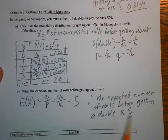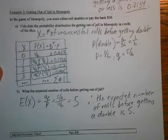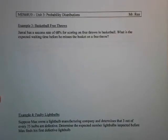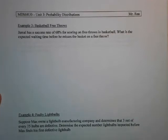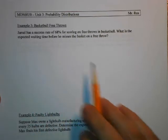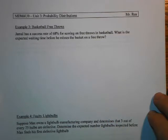That means on average you'd have 5 non-doubles followed by a double. Let's keep going. Example three is a pretty standard question. Jamal has a success rate of 68% for scoring on free throws in basketball. What is the expected waiting time before he misses the basket on a free throw?